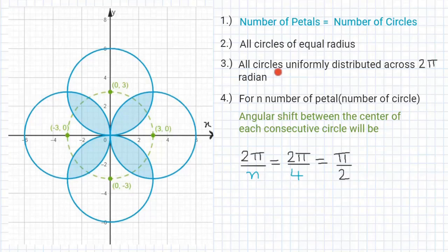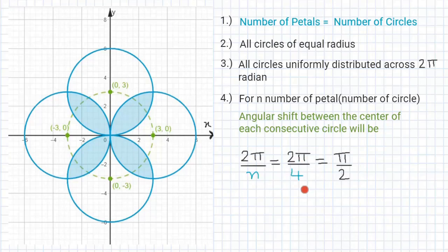All the circles need to be uniformly distributed across the 2π radian. For a given n number of petals — say 4 petals — the angular shift between the center of each circle will be given by 2π/n. With n = 4, that gives 2π/4 = π/2. So the angular shift between the center of each circle will be π/2.